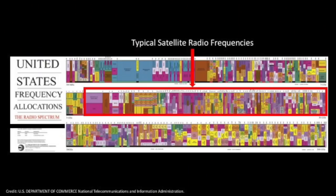These satellites typically use what is known as radio frequency communication systems, also known as RF. The limitation is that the frequencies in these types of systems are highly regulated. This is a chart of the United States frequency allocations. You can see that it is highly congested for typical satellite radio frequencies, and many of the major players in the industry already own the most ideal frequencies.